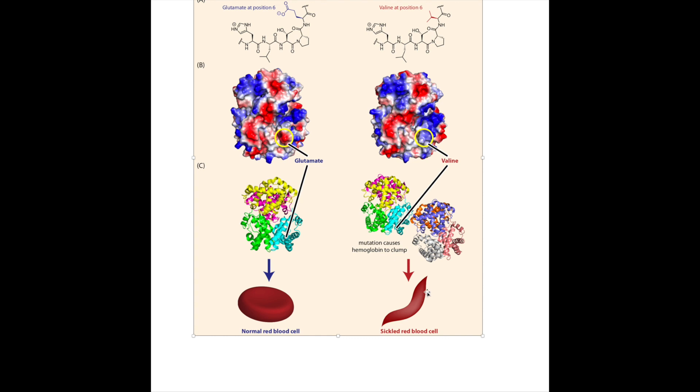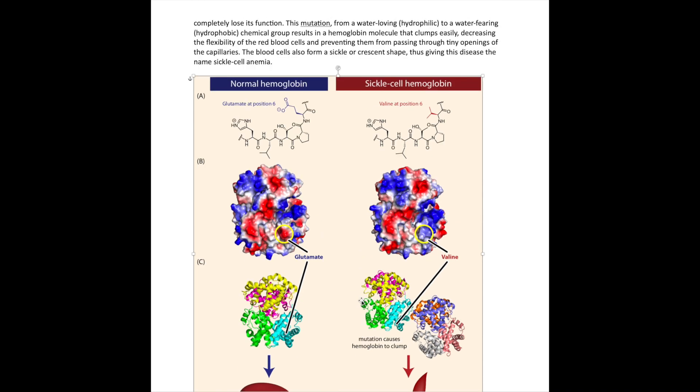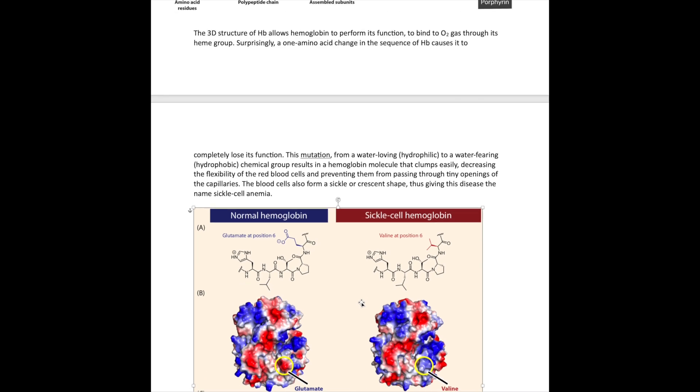When hemoglobin is mutated at position six into valine, the clumping results in deformation of the red blood cell shape so it looks like a sickle or crescent shape. This is often called sickle cell condition, and many times it will lead to anemia that has to be treated. It becomes a serious condition just by the mutation of one amino acid.